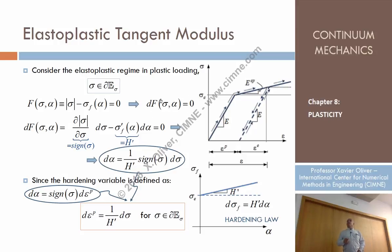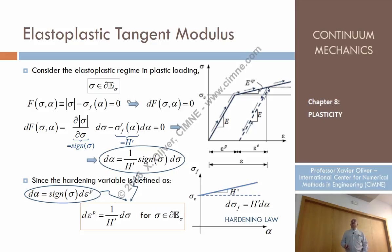First, we're assuming that the stress is on the yield surface, so the yield function F is equal to zero. In other words, the modulus of the stress is equal to the current value of the yield stress. And then we assume we are in plastic loading. That means that the increment of F is going to be zero, so the point is going to be on the boundary of the elastic domain, which is equivalent to the point remaining on the elastoplastic branch.